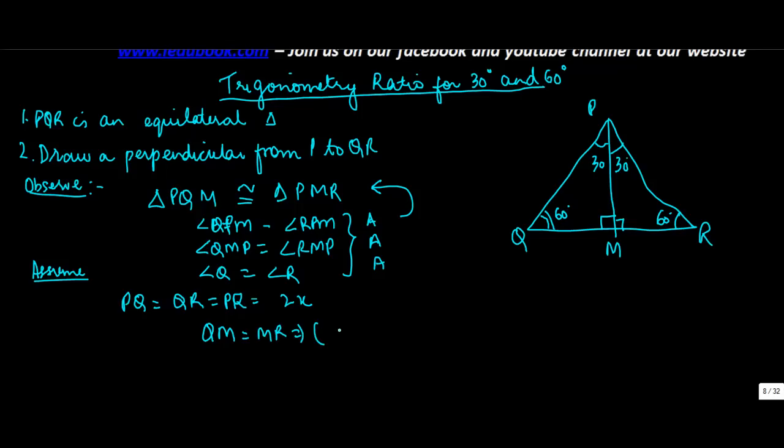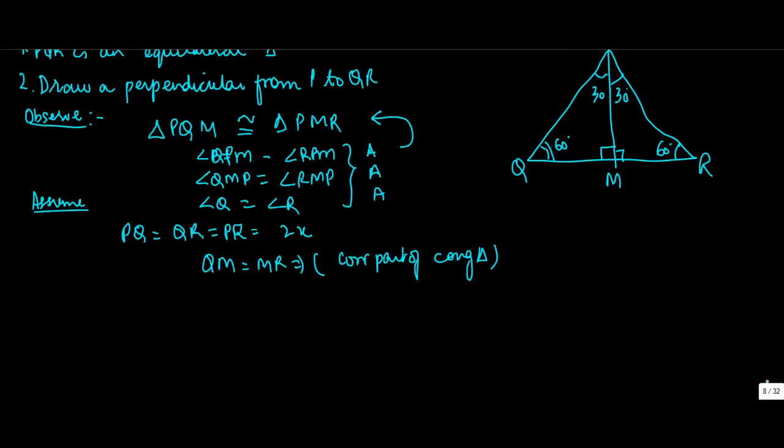Why? These are corresponding parts of congruent triangles. So if QR is equal to 2X, this is also equal to 2X, this is also equal to 2X, then this should be equal to X and this should be equal to X. So QM is equal to MR is equal to X.